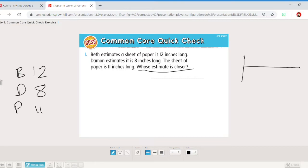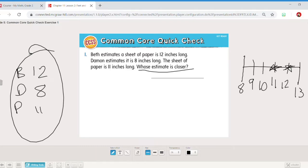Well to know who's closer I'm going to see which number is closest to 11. You can subtract or you could do a number line. I'll do a number line. I'll put 8, 9, 10, 11, 12, 13. We don't have to do starting from zero. We can just put the important numbers and see which is closer. Well the paper is 11. Beth is 12. Damon is 8. Damon is 1, 2, 3 jumps away. Beth here is only one jump away which means Beth is closer to the actual amount.